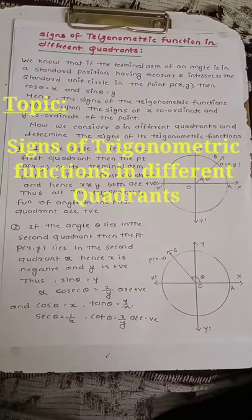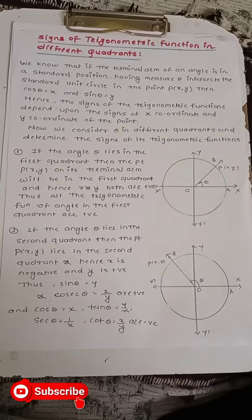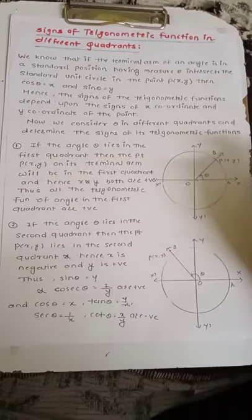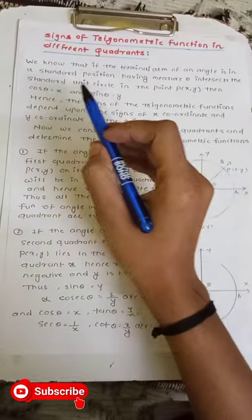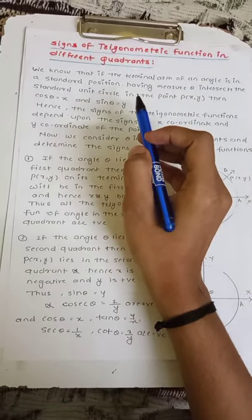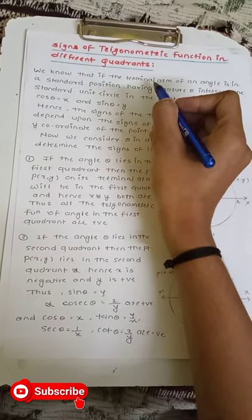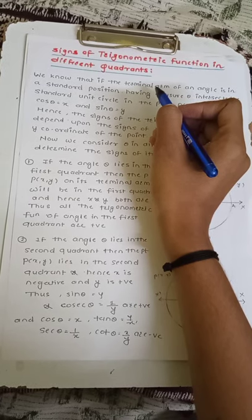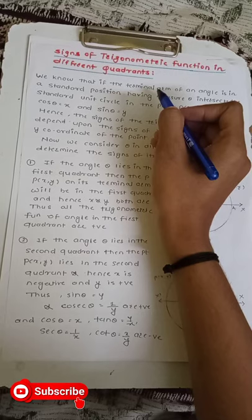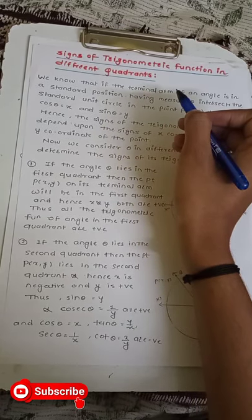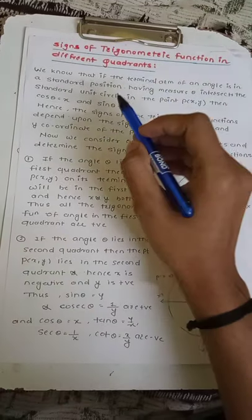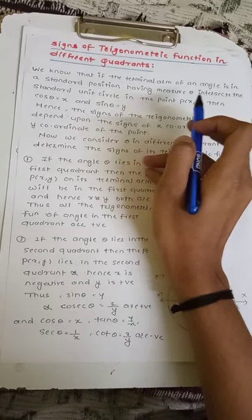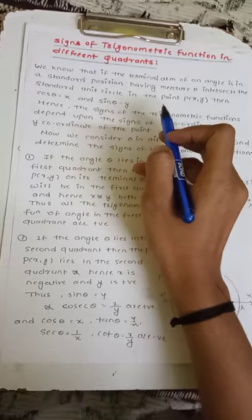Good morning friends. Today we have to study about the signs of trigonometric functions in different quadrants. We know that if the terminal arm of an angle is in standard position — an angle is formed by two rays with a common endpoint, the starting position is called the initial arm and the final position is called the terminal arm — and it intersects the unit circle at point P(x, y), then cos θ = x and sin θ = y.